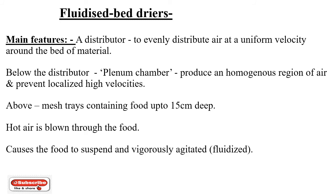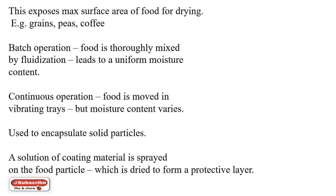The next one is the fluidized bed dryer. The main feature is the distributor, which evenly distributes air at a uniform velocity around the bed of material. Below the distributor there is a plenum chamber which produces a homogenized region of air and prevents localized high velocities. Above is a mesh tray containing food up to 15 centimeters deep. Hot air blown through the food causes it to suspend and be vigorously agitated — this is called fluidization — exposing maximum surface area for drying. Examples include grains, peas, and coffee.